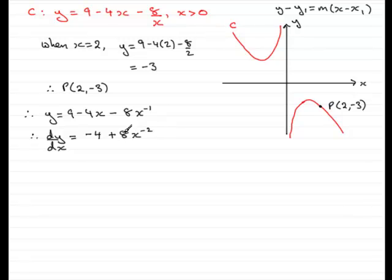I would write this back out in a better format. What we have is minus 4. And x to the minus 2 is 1 over x squared. 8 times 1 over x squared is 8 over x squared. So this is the general gradient at any point on the curve.